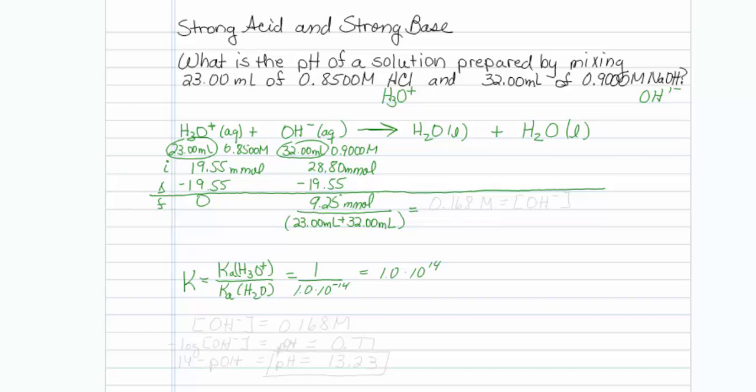So if I divide 9.25 by the sum of those two, I should get my concentration of hydroxide. And it turns out to be 0.168, looks like it's only good to 3 sig figs once I subtract, equal to my hydroxide concentration.